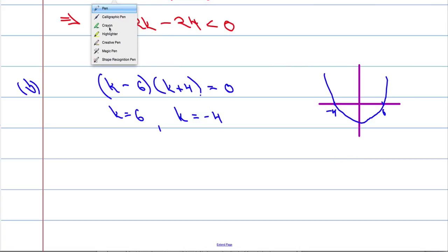And now, what we're going to do is highlight the region where the graph is less than 0. So what values of k will make it less than 0? All these values here. So that means that k must be less than 6, but k must be greater than -4. So -4 < k < 6.